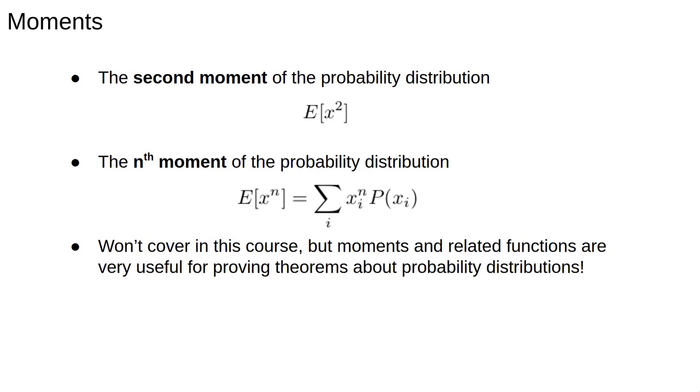For your information the quantity expectation of x squared is often known as the second moment of the probability distribution and generally the expectation of the nth power of x is known as the nth moment. We won't cover it in this course but moments and related ideas such as moment generating functions and characteristic functions are key in proving theorems about probability distributions.